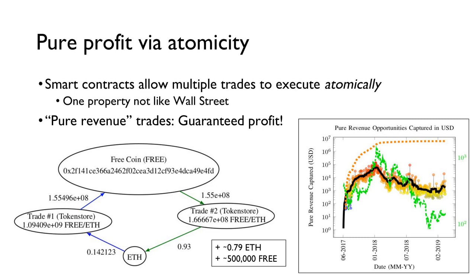On the left is one example of such a pure revenue transaction. A bot completes two trades on the decentralized exchange token store, labeled here as trade 1 and 2. In the first trade, the bot sells ETH to obtain free coin at a rate of 1.09 times 10 to the 9th free coin per ETH. In the second trade, some user is looking to sell ETH to acquire free coin at a rate of 1.66 times 10 to the 8th free coin per ETH — likely a typo, as it is a price that's an order of magnitude higher. By executing both of these typo trades atomically, the bot is able to make a profit of 0.79 ETH and 500,000 free coin, profiting in every traded asset. This is because blockchain exchanges do not feature automatic settlement of cross transactions, as centralized exchanges do, and therefore allow bots on-chain to take transactions at any price.